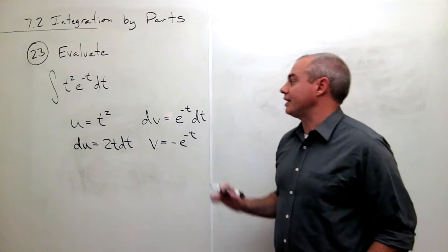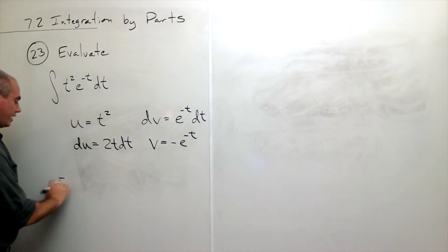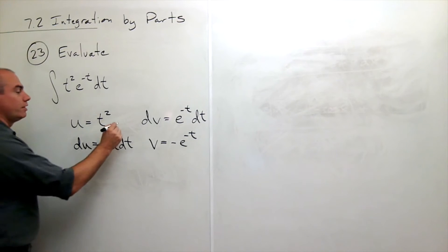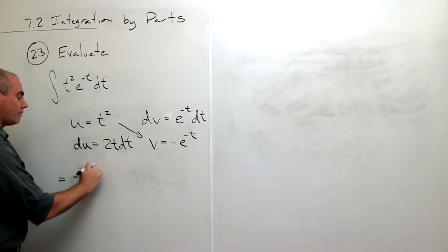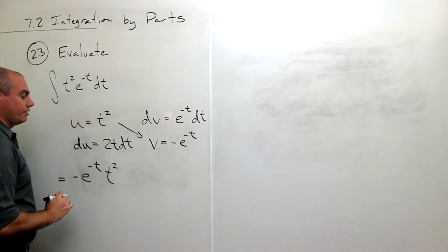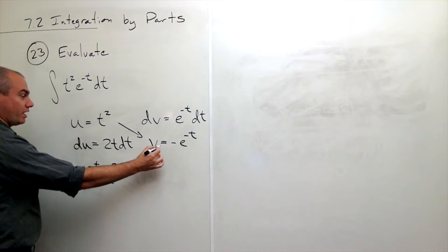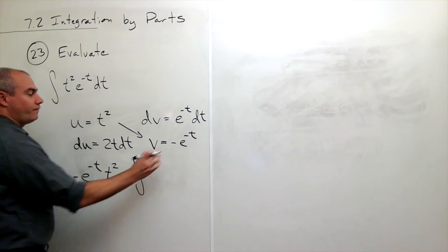So I can rewrite the integral using integration by parts and I get that this is equal to u times v which is minus e to the minus t times t squared so u times v minus the integral of v du.